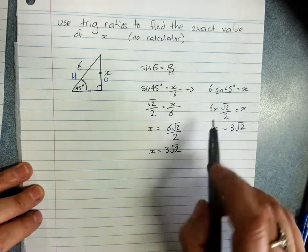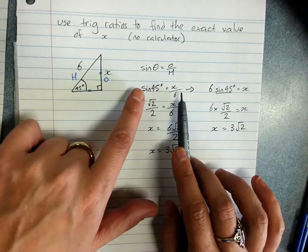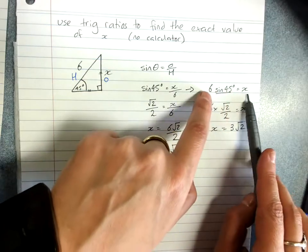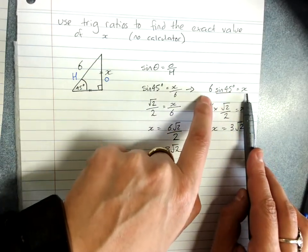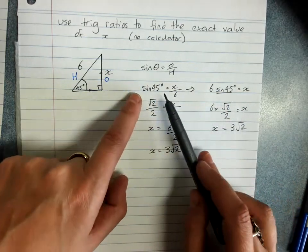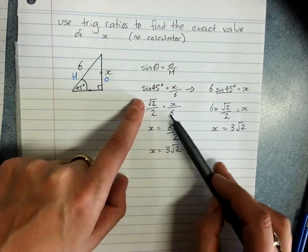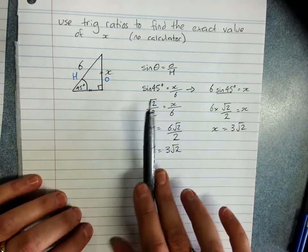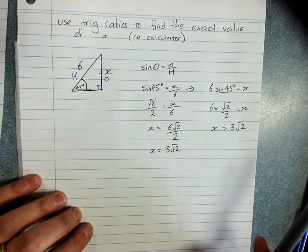So if you prefer to rearrange, because you're very good at rearranging this step, and then substitute in our exact value, you can. If you prefer to substitute here and then rearrange, you can. Either of these ways of showing this is fine.